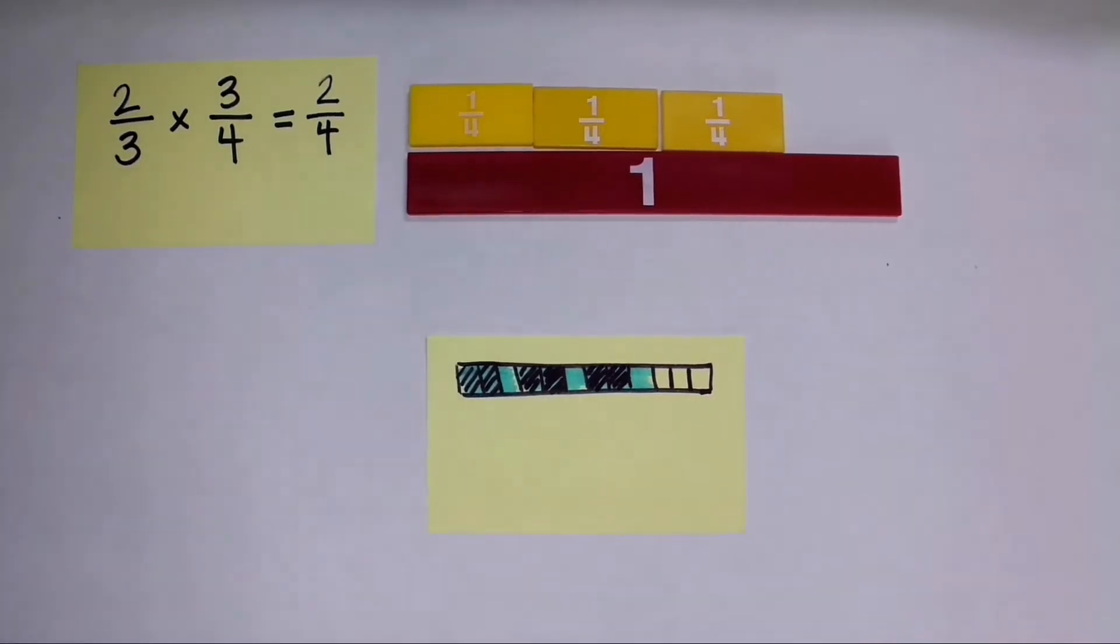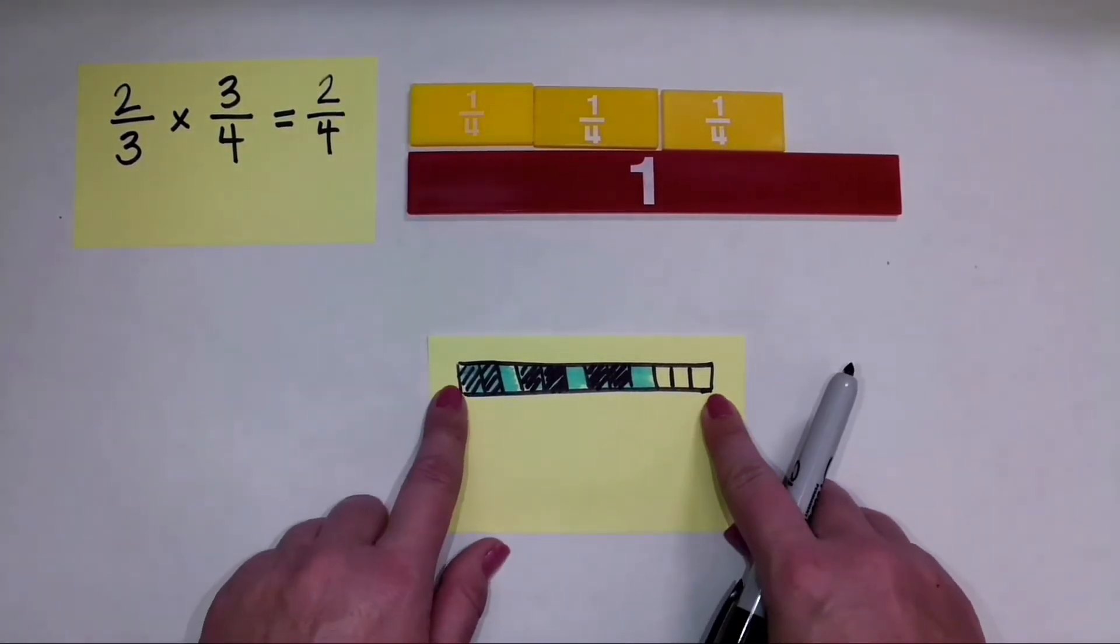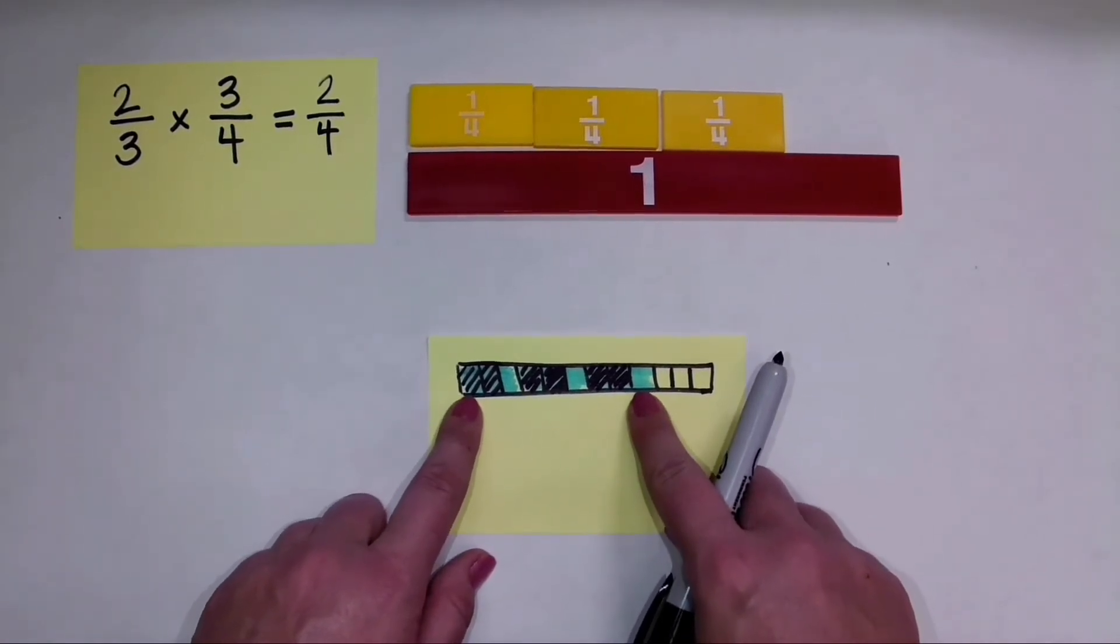I will do that here. But I don't have to shade anything because I really wasn't focused on taking 2 thirds of 4 fourths. I was only focused on taking 2 thirds of 3 fourths.